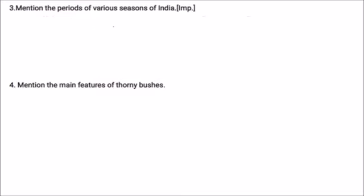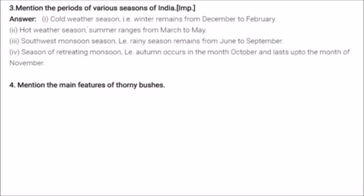The periods of India's seasons: cold weather season (winter) from December to February; hot weather season (summer) from March to May; southwest monsoon season (rainy season) from June to September; and the season of retreating monsoon (autumn) from October to November.